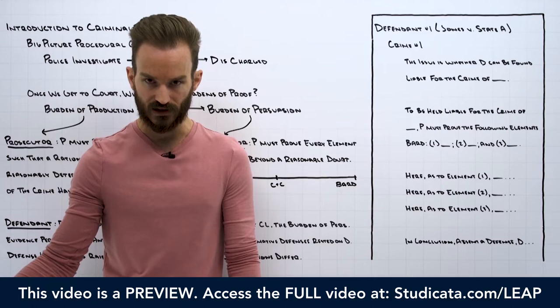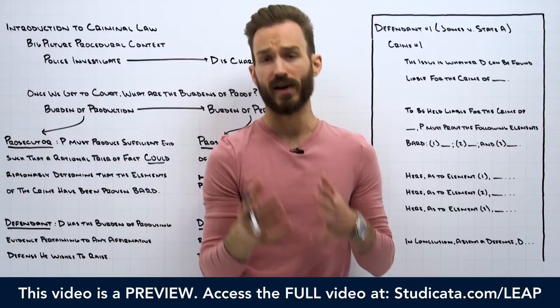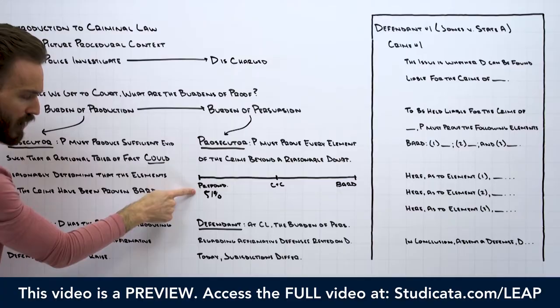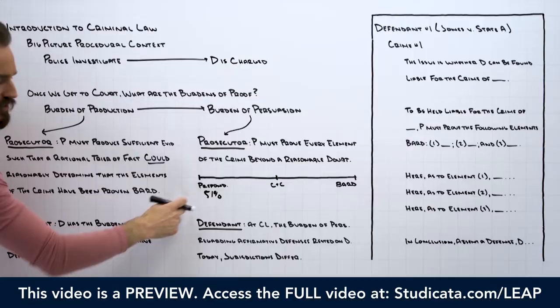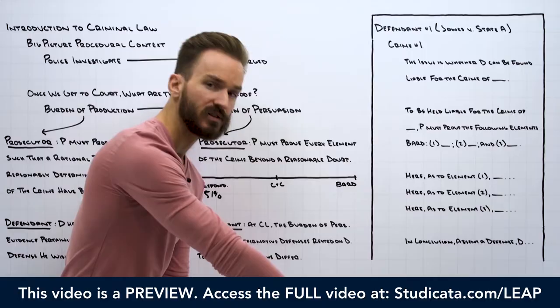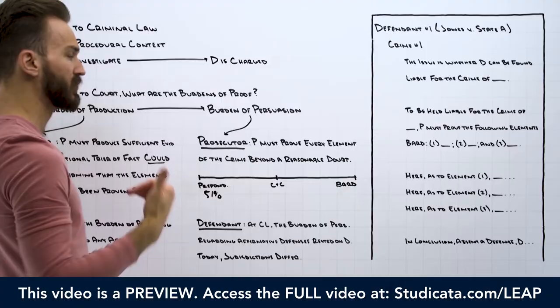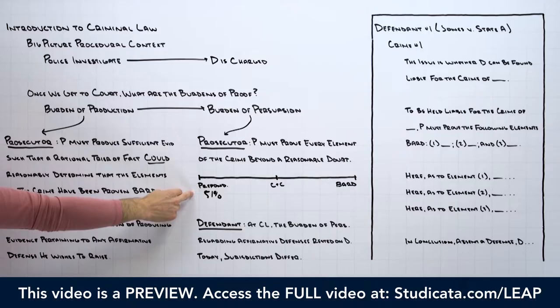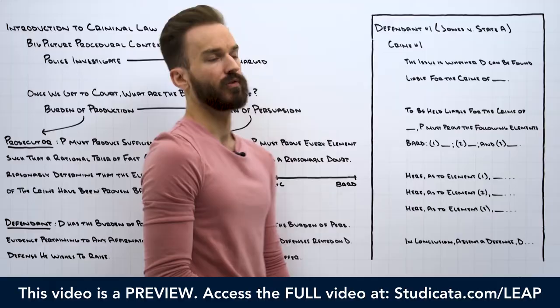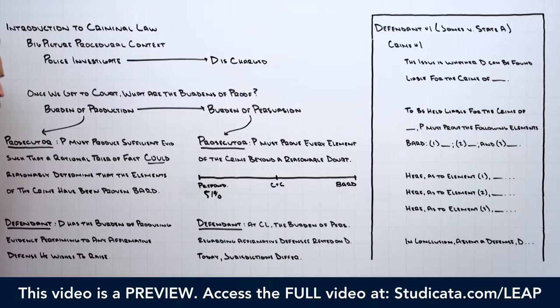Think about civil cases like torts — for example, negligence. If a plaintiff is suing a defendant for negligence, they have to prove duty, breach, causation, and damages by a preponderance of the evidence, which basically means each element is more likely to have occurred than not. If the jury can say they're 51% sure each element is satisfied, that's enough in civil cases — things like breach of contract and tort claims. The plaintiff has the burden of proving each element by a preponderance of the evidence, meaning more likely than not, or over 50%.